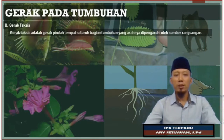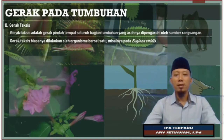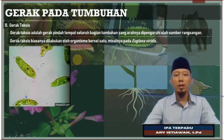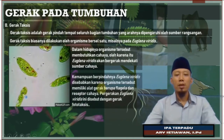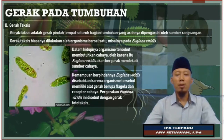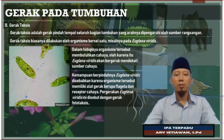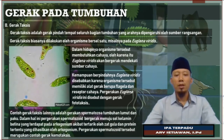Kemudian yang berikutnya ada yang namanya gerak taksis. Gerak taksis adalah gerak pindah tempat seluruh bagian tubuh yang arahnya dipengaruhi oleh sumber rangsangan. Misalkan ada Euglena viridis, hewan organisme bersel satu. Kalau kita lihat secara detail biasanya harus menggunakan mikroskop. Dalam hidupnya organisme tersebut membutuhkan cahaya, oleh karena itu Euglena viridis akan bergerak mendekati sumber cahaya sehingga berpindah. Kemampuan berpindah Euglena viridis disebabkan karena organisme tersebut memiliki alat gerak yaitu flagelat dan reseptor cahaya. Contohnya juga adalah pada gerakan spermatozoa pada tumbuhan lumut dan juga paku.